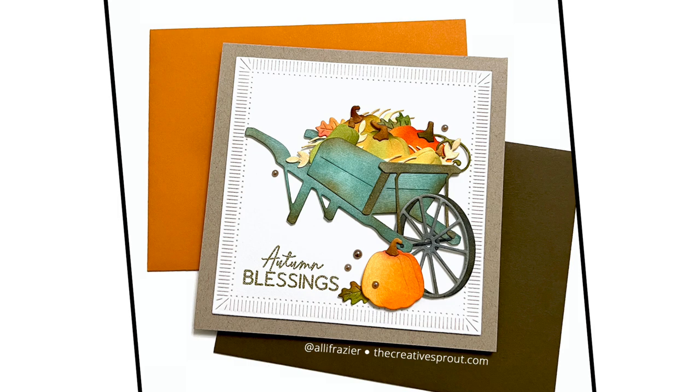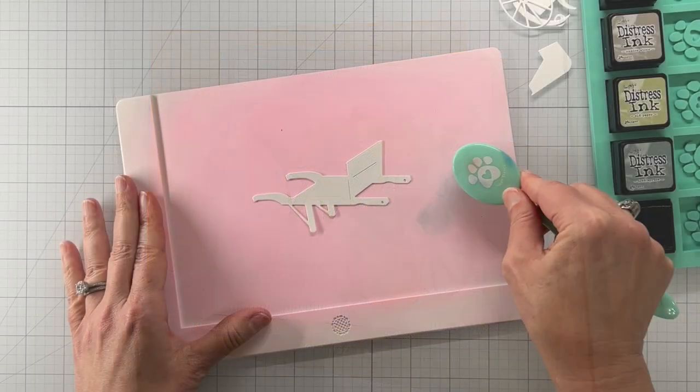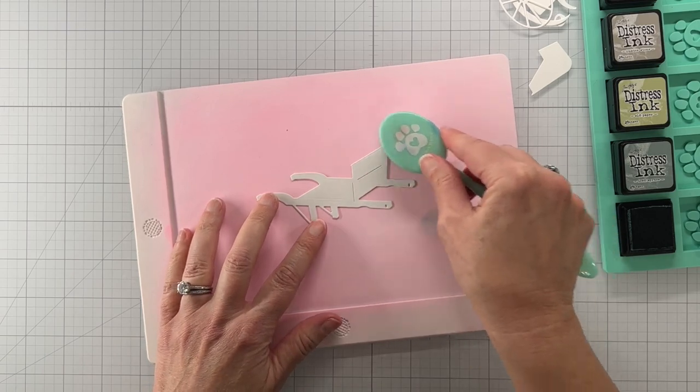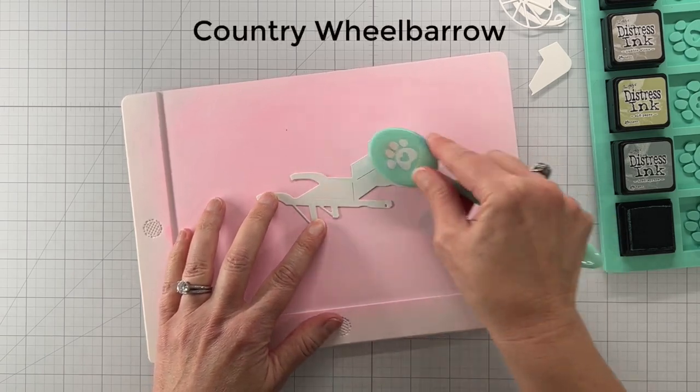All right, so this is the first card we're going to make and I know you're saying to yourself, but Allison, a square is still a rectangle. I know, bear with me.